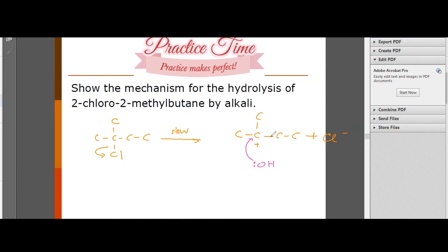Once again, you should draw the correct curly arrow. This should be negative, this should be positive, because the heterolytic fission formed during this slow step. This is fast to form this compound, 2-chloro-2-methylbutane-2-ol. This is the SN1 mechanism for this equation.